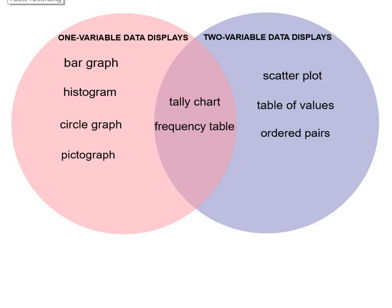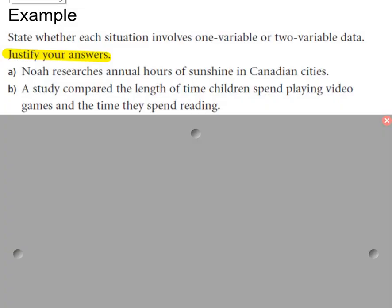We can summarize the one variable data display and the two variable data display in a Venn diagram. For example, bar graphs, histograms, circle graphs, and pictograms are always going to be identifying one variable data, while two variable data can be identified by scatter plots, table values, ordered pairs. And sometimes tally charts and frequency tables can be considered as one variable data and two variable data, depending how they're formatted.